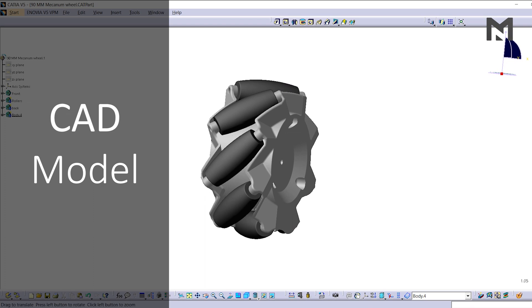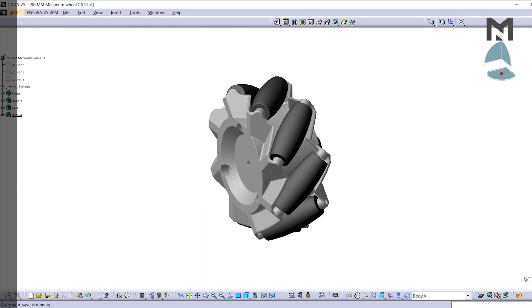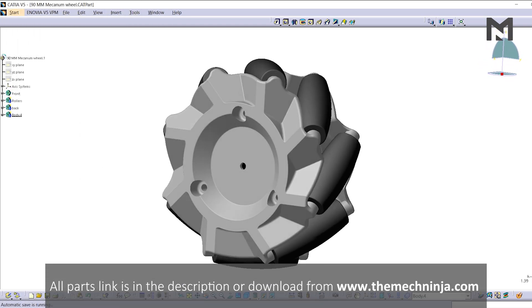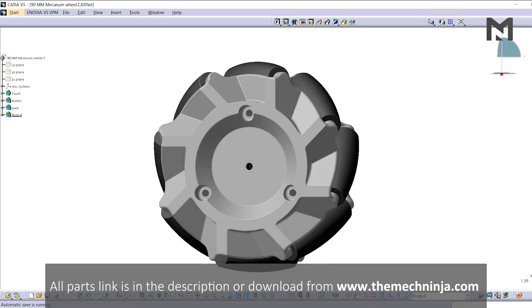I have designed it and it has 4 main parts: a top part, one bottom part, eight rollers, and a wheel connector. I have given the link of these files in the description.